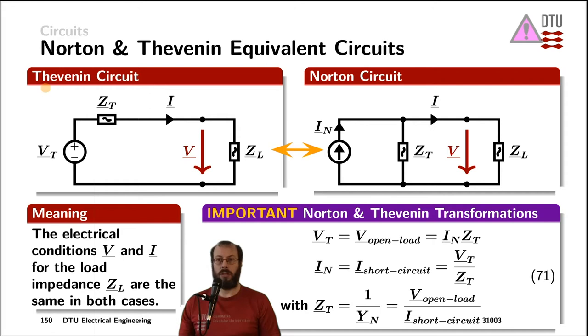These two circuits are called the Thevenin circuit and the Norton circuit, named after their inventors. For a specific load impedance ZL, which is the same in both cases, the current flowing through that load impedance is the same in both circuits, and so is the voltage across that load impedance.